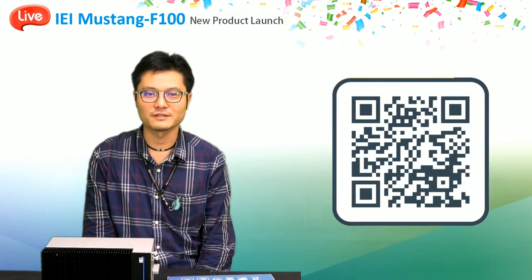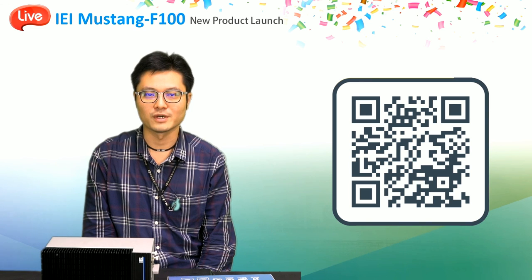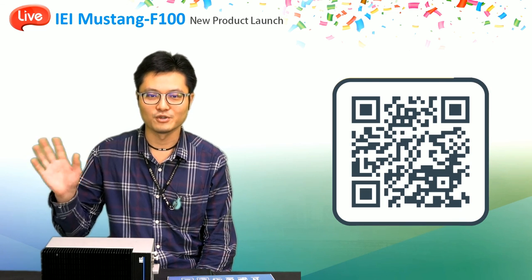After today's presentation and demonstration, hopefully you can learn more about the IEI Mustang F100-A10 acceleration card and what you can do with it in your future deep learning tasks. For more information, please scan the QR code or contact IEI and we will get back to you very soon. Don't forget to press like and share the video. Thank you.